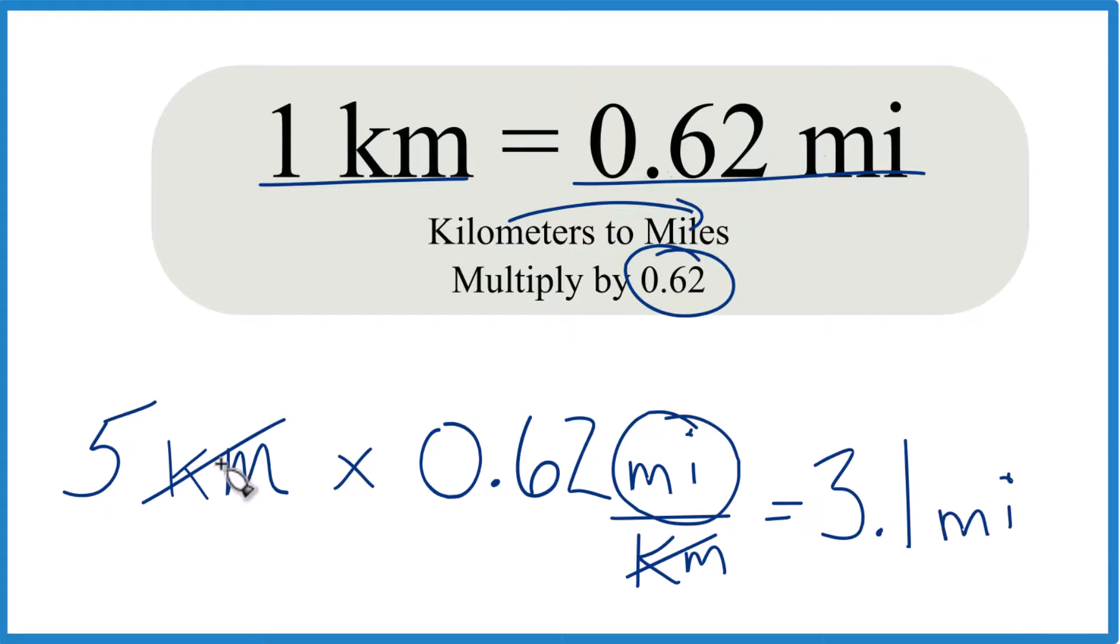That's what we're looking for. So when you convert 5 kilometers to miles, you end up with 3.1 miles. If you want to go the other way, you could divide 3.1 by 0.62, and that would give you 5 kilometers.